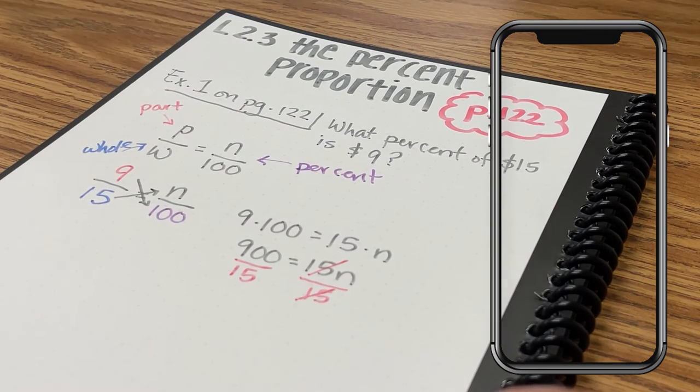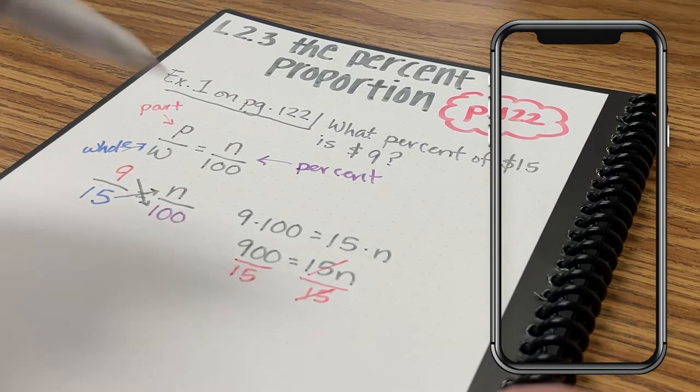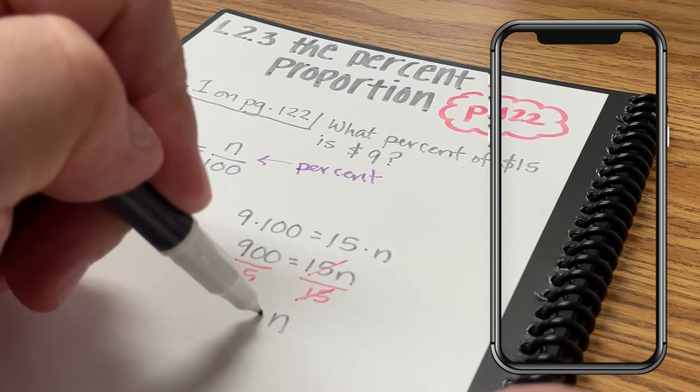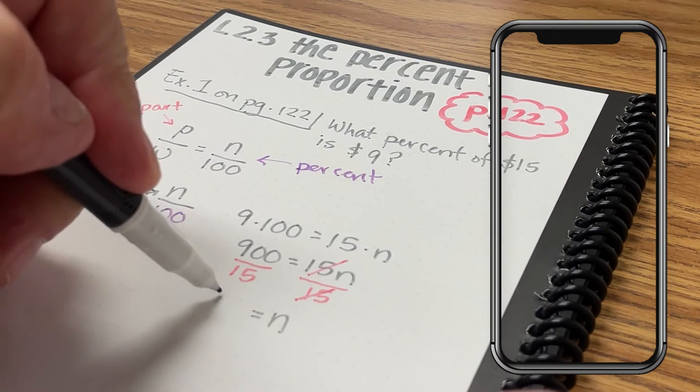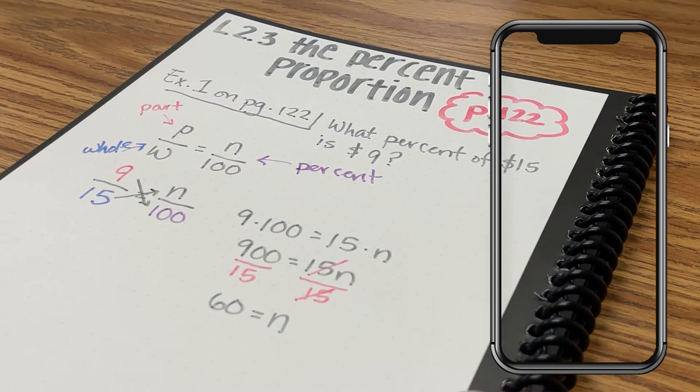So 15n divided by 15 is just going to give me n, and then 900 divided by 15 is going to be 60.